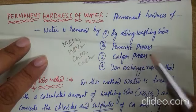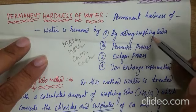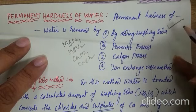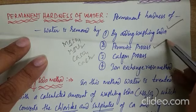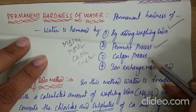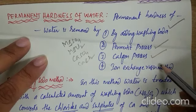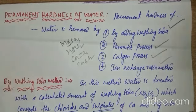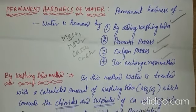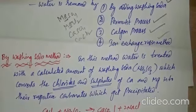The methods are: one, by adding washing soda; second one, permutite process; third one, Calgon process; and fourth one is ion exchange resin method. Now let us discuss one by one. The first method is by using washing soda.